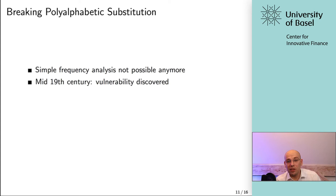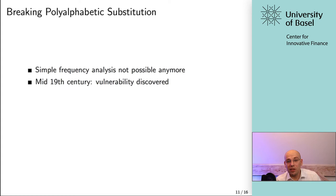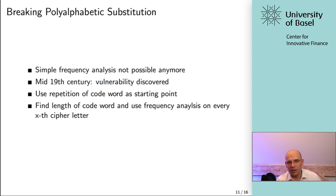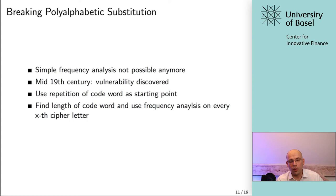A simple frequency analysis is obviously not going to work anymore for polyalphabetic substitution. But in the mid-19th century, a vulnerability was discovered that has to do with the code word. What you do to decrypt it is exploit the repetition of the code word — you try to guess how long the code word actually is, and you look for patterns. You find the length of the code word and use frequency analysis on every x-th cipher letter. The text must have a certain relative length compared to the code word for this to work.